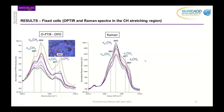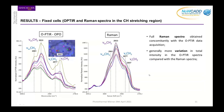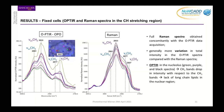Is this reflected in the Raman? Looking at the same locations: in the green, purple, and black spectra from the nucleolus, the CH₂ shoulder almost completely disappears, confirming the lack of long-chain lipids in the nuclear region. We generally get more variation in intensity in the OPTIR compared with the Raman, but the Raman clearly corroborates the finding of reduced CH₂ groups in the nucleolus.